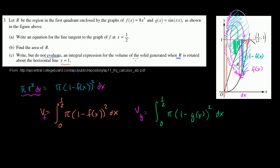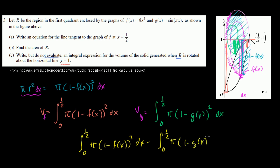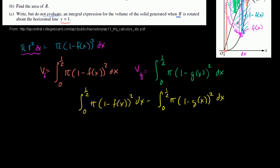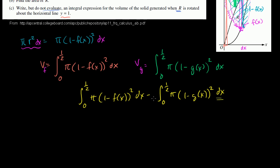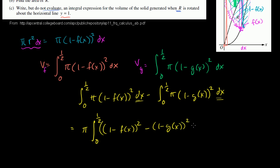The volume of the solid generated when R is rotated — R is the space between f(x) and g(x) — is the difference between these volumes. This is the outer volume, and we hollow it out by subtracting the inner volume. So the volume equals the integral from 0 to 1/2 of π(1 − f(x))² dx, minus the integral from 0 to 1/2 of π(1 − g(x))² dx. We can factor out π since the bounds and variable are the same: π times the integral from 0 to 1/2 of [(1 − f(x))² − (1 − g(x))²] dx.